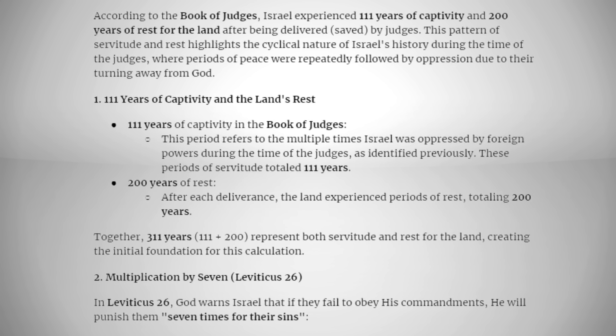According to the book of Judges, Israel experienced 111 years of captivity and 200 years of rest for the land after being delivered by the judges. This pattern of servitude and rest highlights the cyclical nature of Israel's history during the time of the judges, where periods of peace were repeatedly followed by oppression due to their turning away from the God of Israel. Together, 111 years and 200 years represent 311 years — both servitude and rest for the land — creating the initial foundation for this calculation.